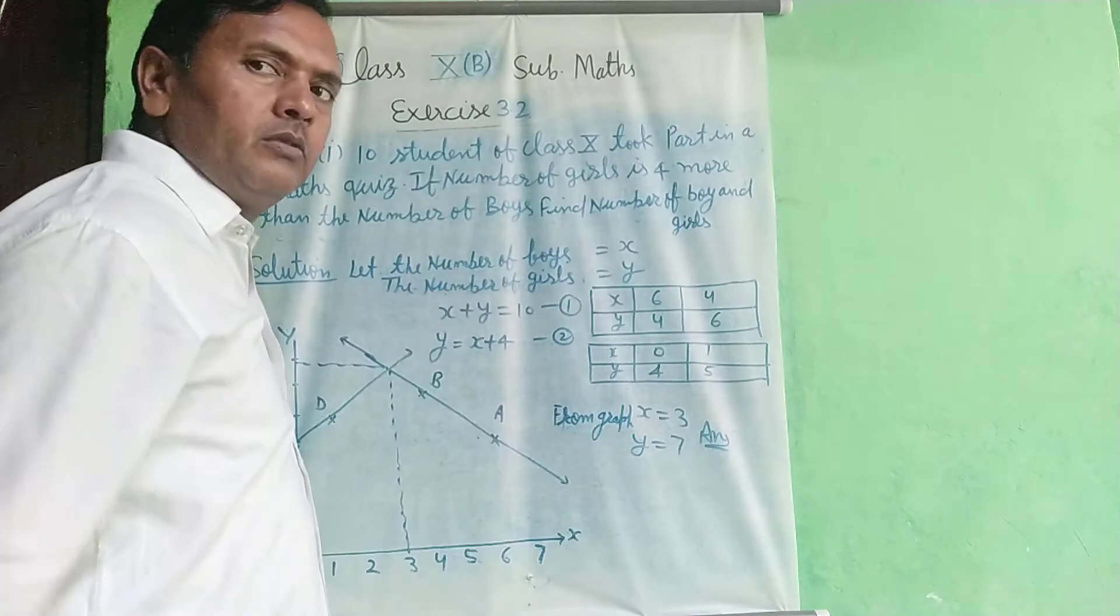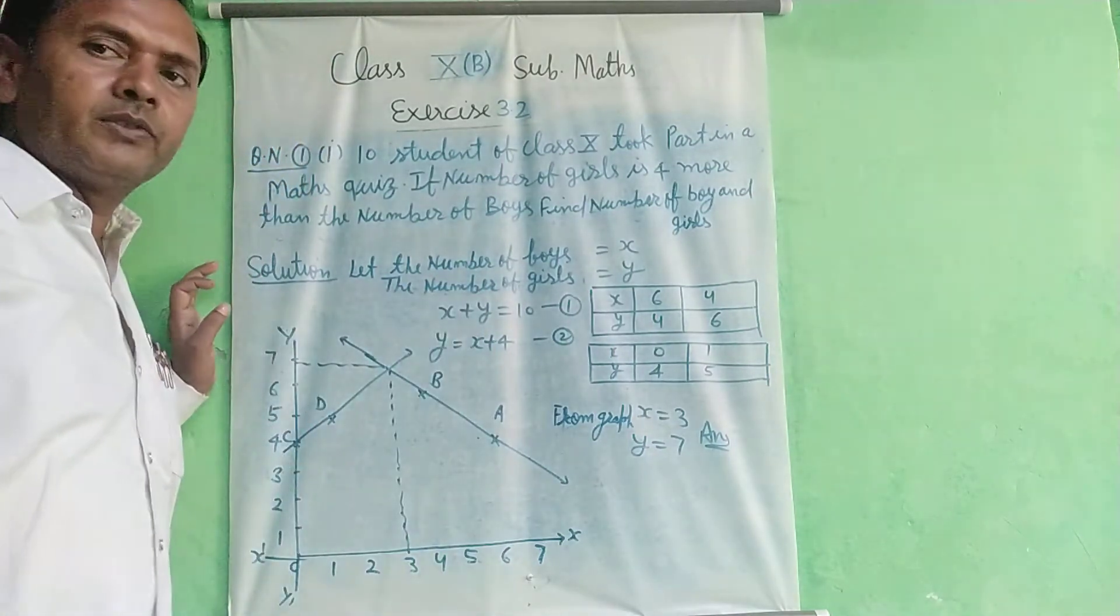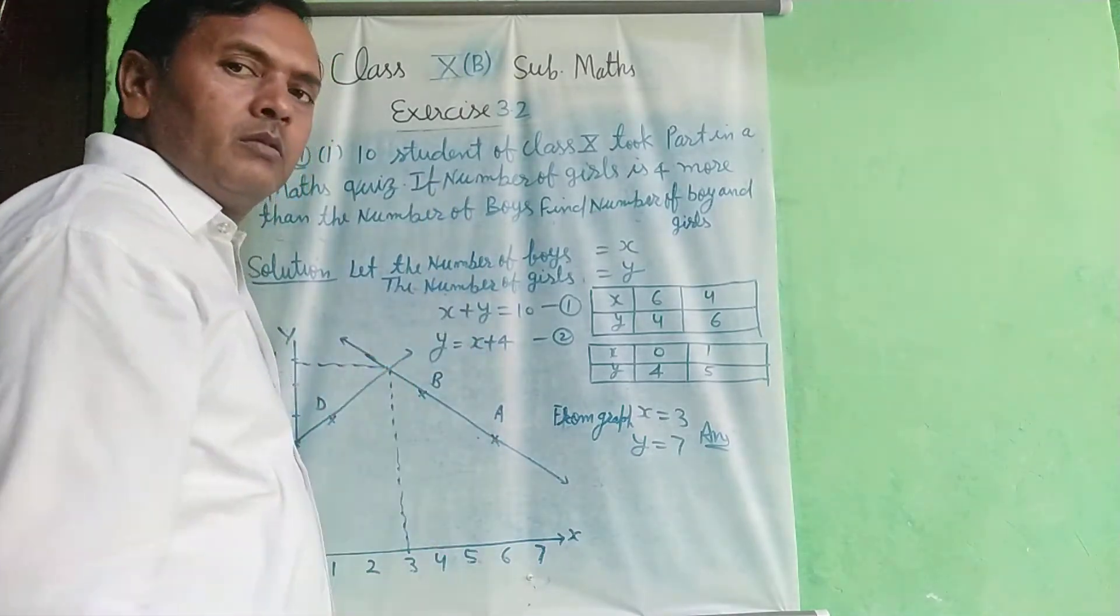Let the number of boys equal to x, the number of girls equal to y. Total number 10 students, boys and girls.